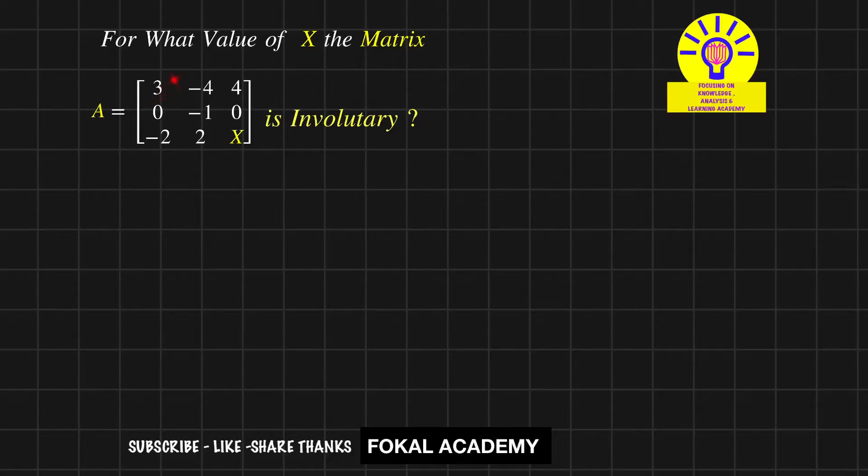In this problem, for what value of x is the given matrix an invertible matrix? An invertible matrix means whenever a matrix is multiplied by itself, it gives the identity matrix. So that matrix is called an invertible matrix.